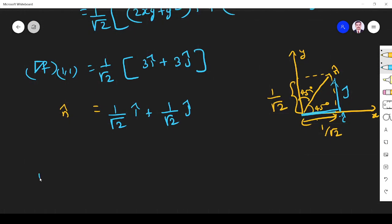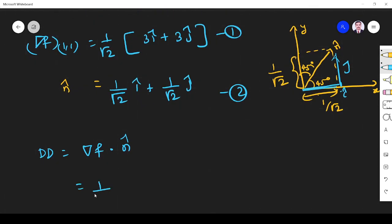What I need is the directional derivative. The directional derivative is ∇f · n̂. Take the dot product between equations 1 and 2. So 1/√2 is common, take 1/√2 outside. So 1/√2 times 1/√2, it will be 1/2. So we have 3 and 3.